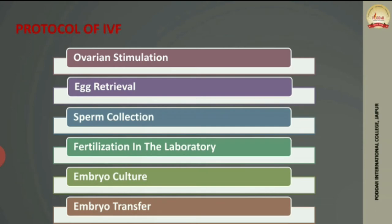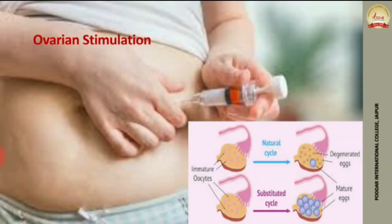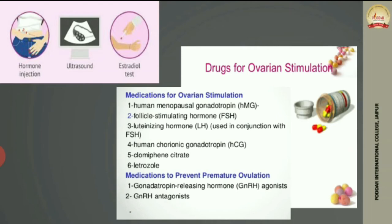The IVF process has mainly 6 steps. The first step is ovarian stimulation. Normally in the natural cycle, multiple eggs are present but only one develops and is released while the rest degenerate. However, if we stimulate the ovary with drugs, many eggs will mature instead of just one. For IVF, we need multiple eggs because having more eggs increases the chances of successful fertilization.